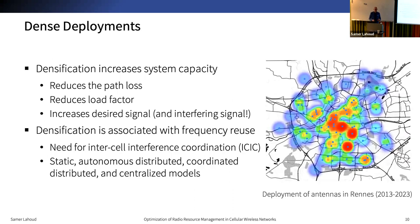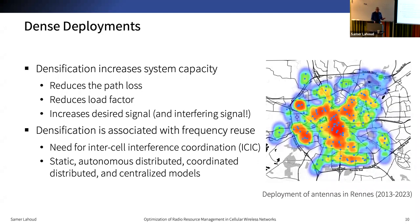With spectrum efficiency approaching its limit, cellular networks revert to diversification and densification in order to increase their capacity. The following figures show a heat map of the density of antennas in Rennes in 2013 and in 2023. As noted, the densification follows spatial demand with an increasing number of antennas in the crowded city center. Such densification reduces path loss and load factor and increases the desired signal, but unfortunately also increases the interfering signal.